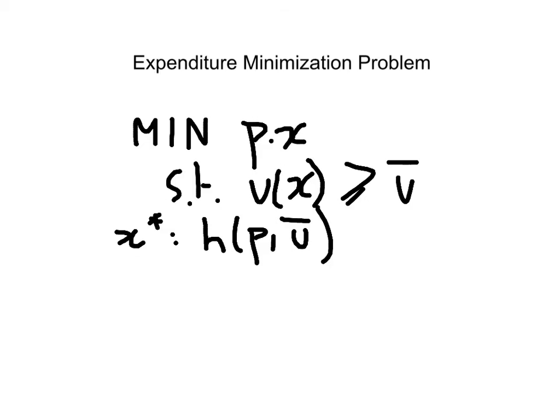If we plug the bundle into the objective function, we look at pH, that's going to give us the value function. We're going to define this value function. We're going to call it the expenditure function, function of prices and U-bar.